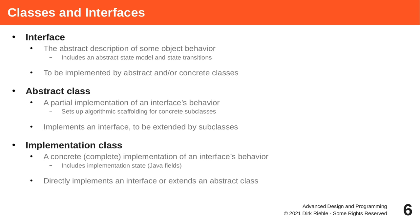In Java and many other programming languages, the implementation of an interface is done by classes, so a class becomes the combination of the interface it implements and embodies, plus the methods that implement the interface, and the concrete state through fields of the class for its objects.